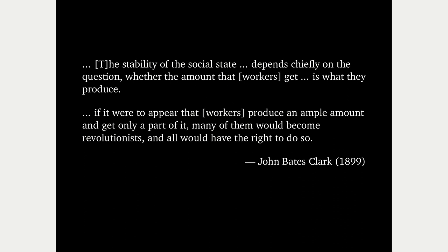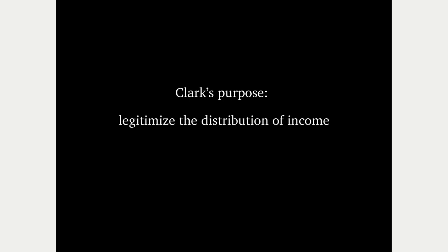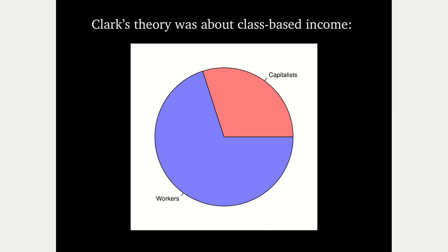Clark was very clear: he wanted to create a theory of income distribution claiming a natural law in which everybody earns what they produce, to convince workers they earn what they produce so they won't overthrow the social order. Unfortunately, this politics gets lost when economists are trained in this theory. Clark's purpose was to legitimize the distribution of income — specifically class-based income, differentiating between capitalists who earn income from property and workers who earn wages and salaries.